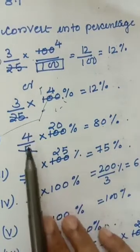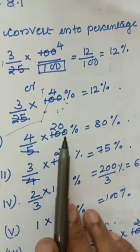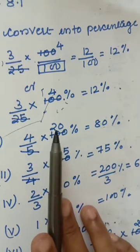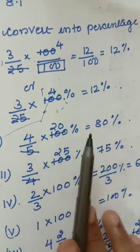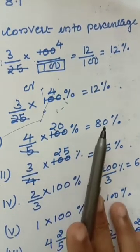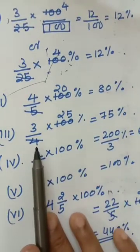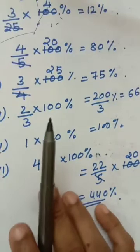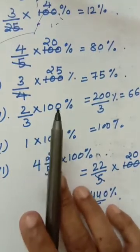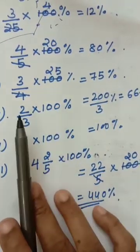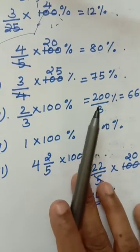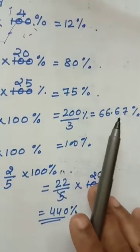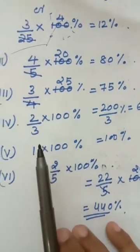See: 4 by 5 multiplied by 100 percentage. 5 and 100 can cut out to give 20. 20 multiplied by 4 is 80 percentage. Like that 3 by 4 — cut out and write in percentage. Here also 2 by 3 multiplied by 100 percentage. You cannot cut out these numbers. So multiply: 2 multiplied by 100 equals 200 by 3 percentage. You divide it and get 66.67 percentage.